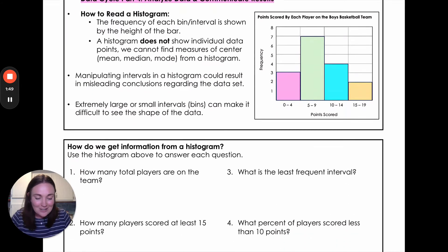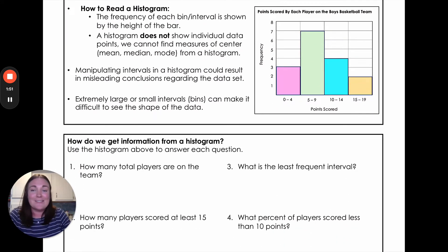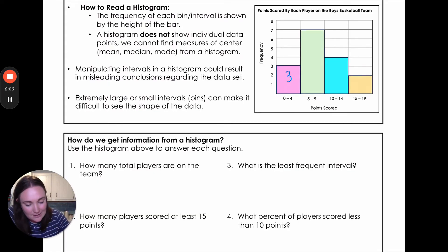Okay, let's practice actually answering some questions based off this histogram that we've seen up here. So the first question we're asking is how many total players are on the team? Anytime they're asking for a total, we're just going to be adding up all the frequencies to get that total number of players overall. So we've got three, seven, four, and two and we add that all together. We get 16 total players.